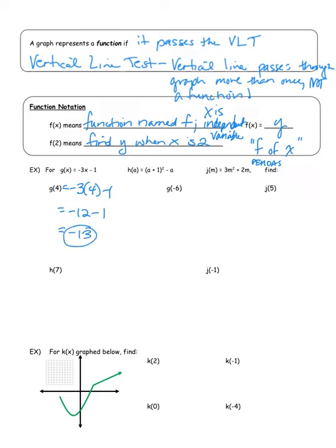The next one says g of negative six. Going to the same equation: g of negative six equals negative three times negative six minus one. A negative times a negative is a positive, giving 18 minus one, which equals 17.